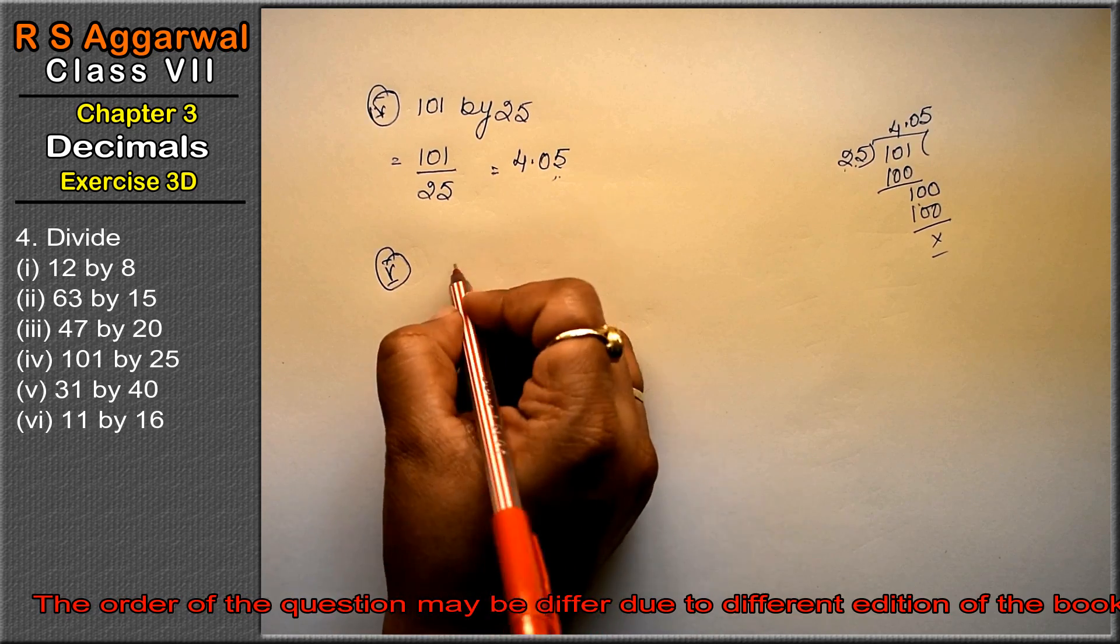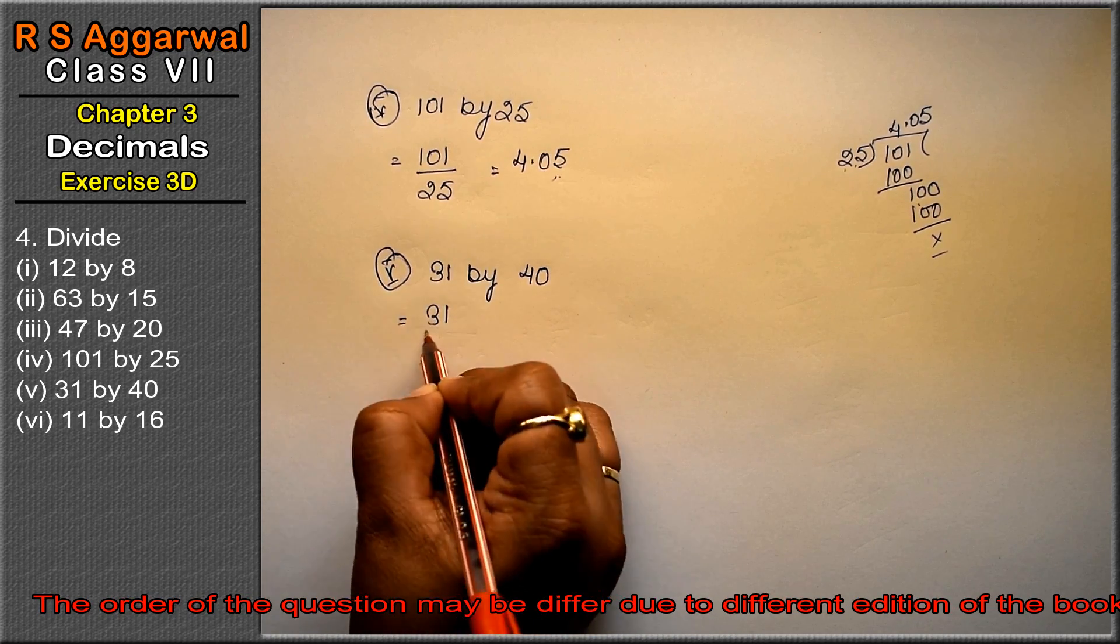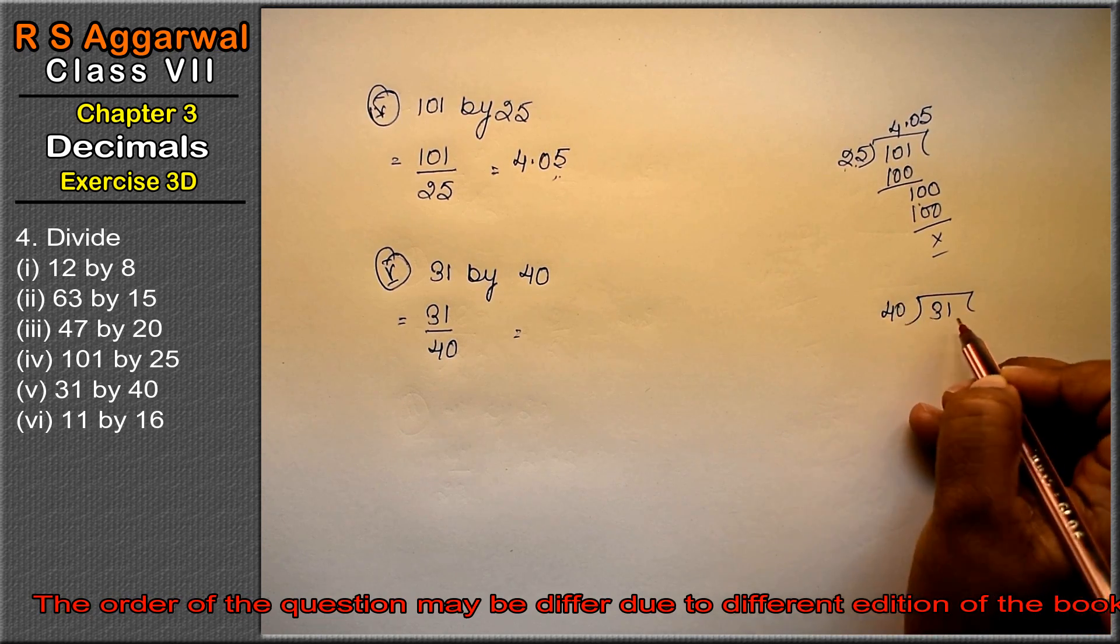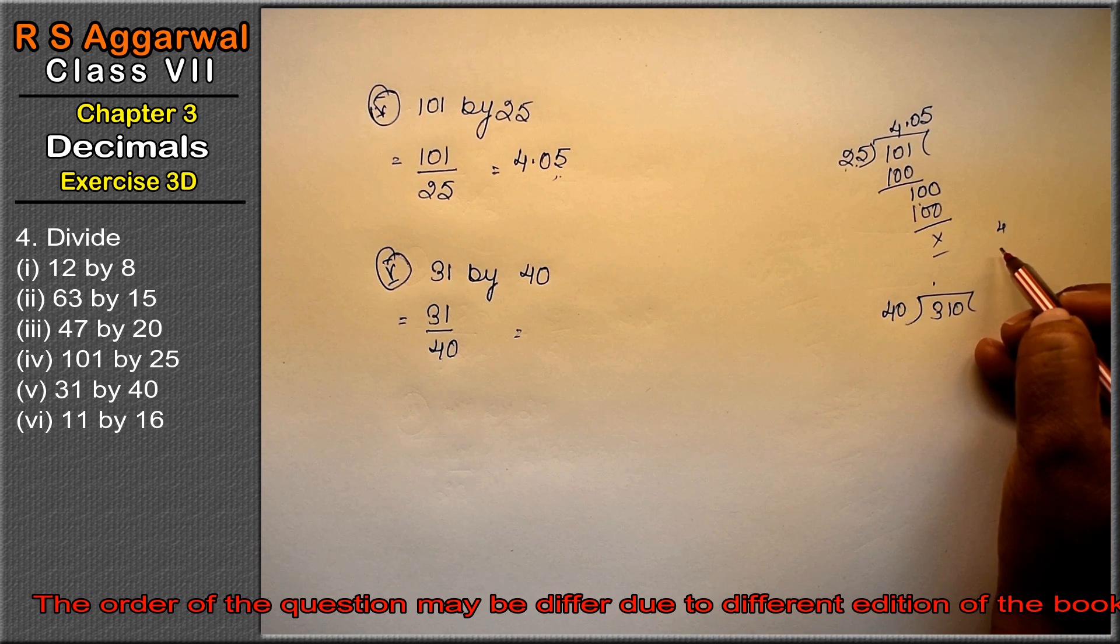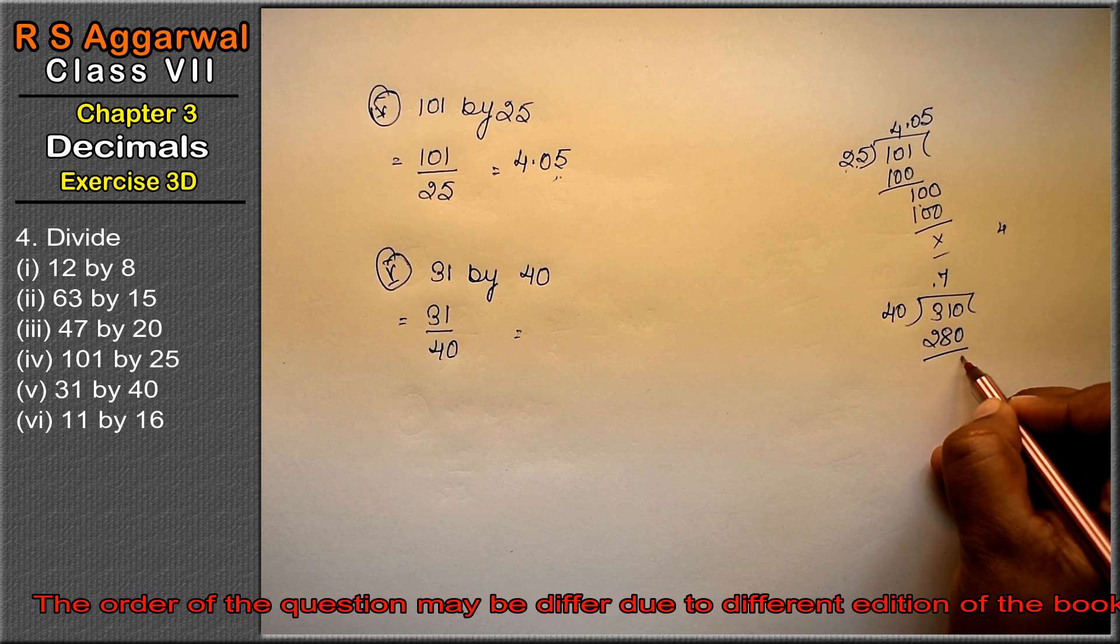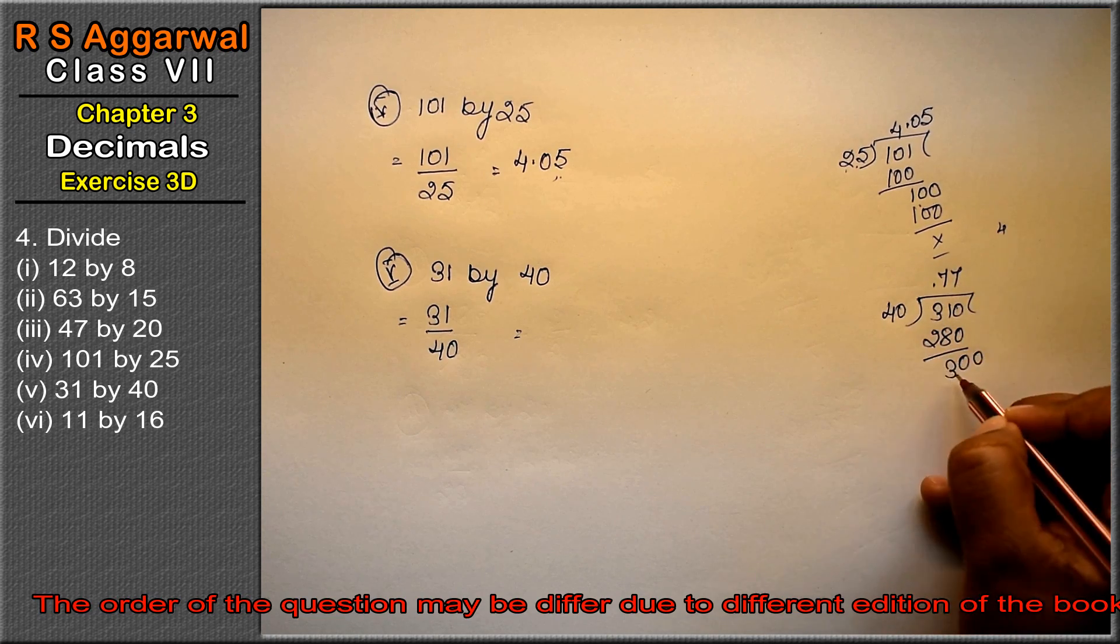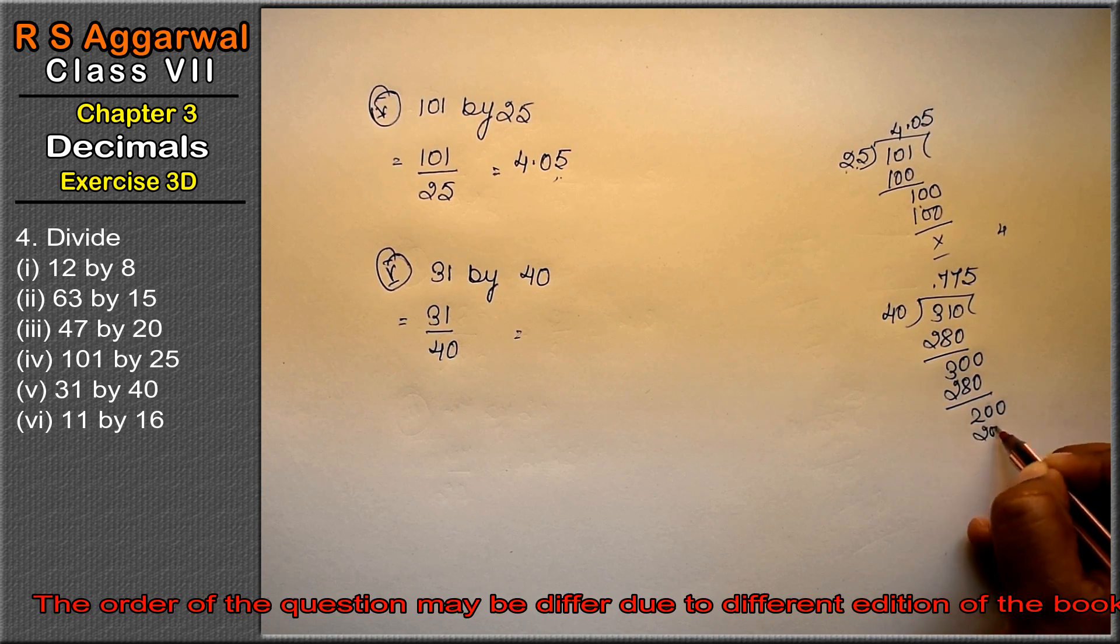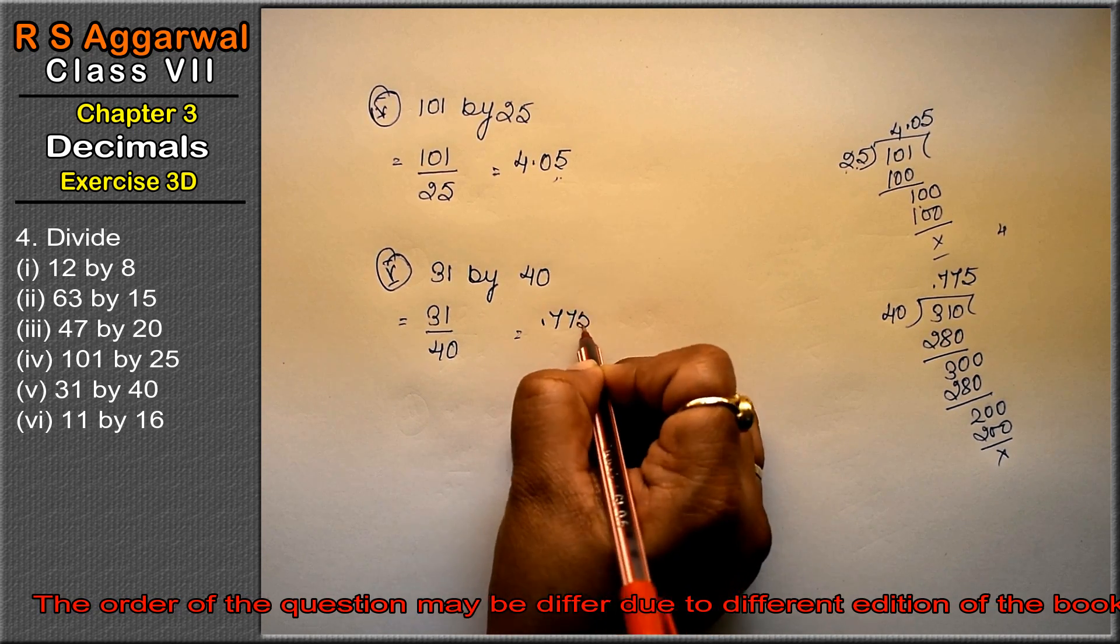Fifth part is 31 by 40. Dividing 31 by 40 - since 31 is smaller, we add decimal point zero. 40 goes into 310 seven times (280), leaving 30. Adding zero: 40 goes into 300 seven times (280), leaving 20. Adding zero: 40 goes into 200 five times (200) exactly. So the answer is 0.775.